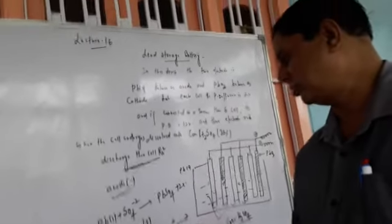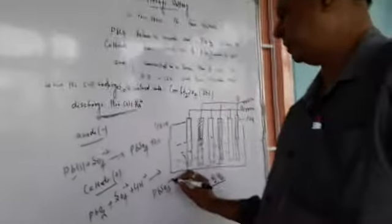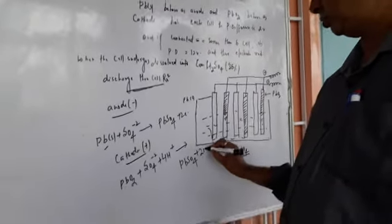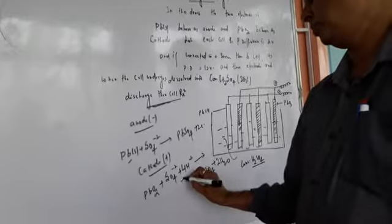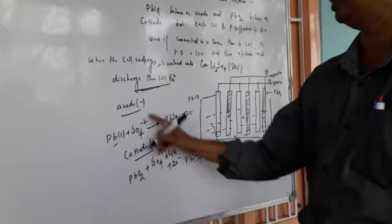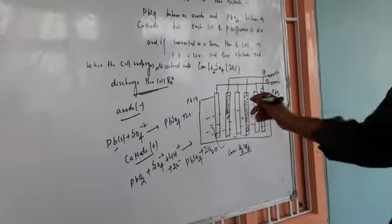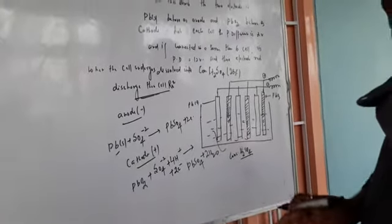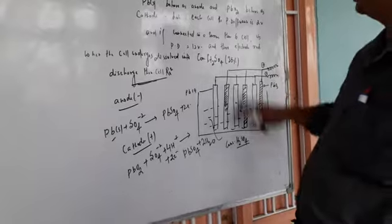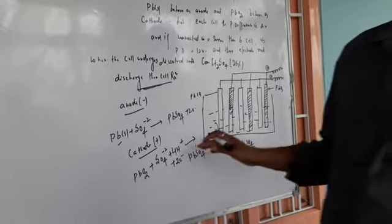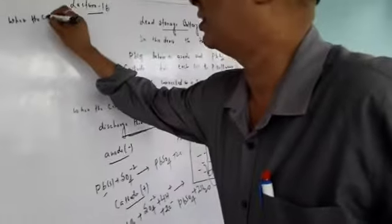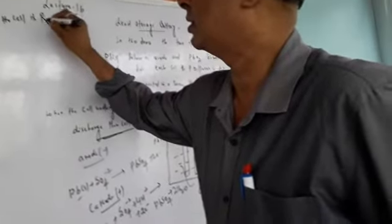At the cathode during discharge: PbO₂ + SO₄²⁻ + 4H⁺ + 2e⁻ → PbSO₄ + 2H₂O. This is the reduction reaction at the cathode. This is the secondary cell discharge reaction. When the cell is recharged, the reactions follow in the reverse order.